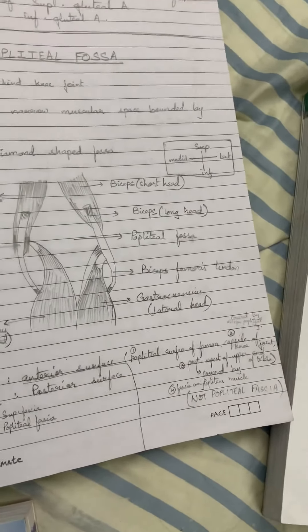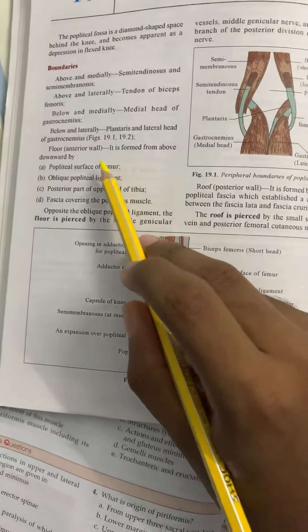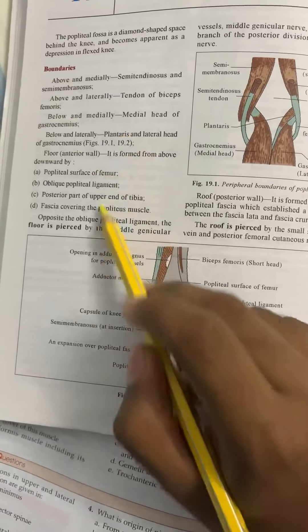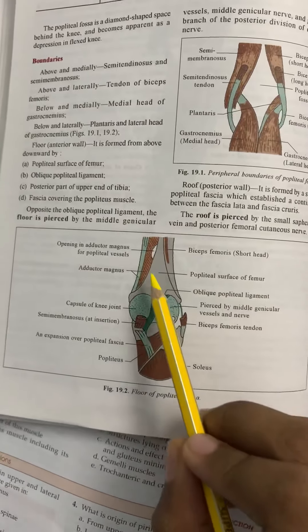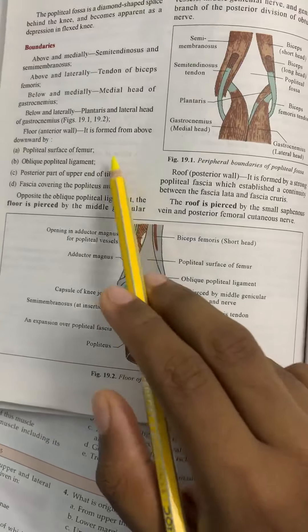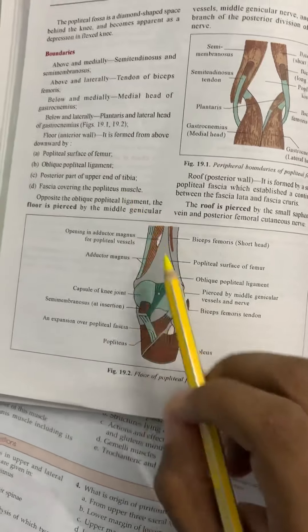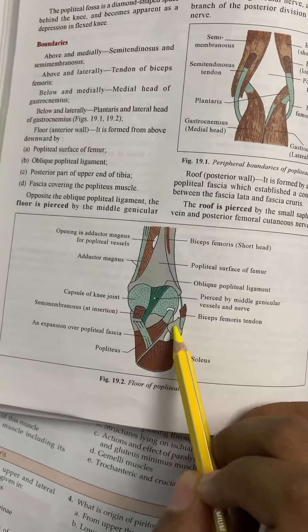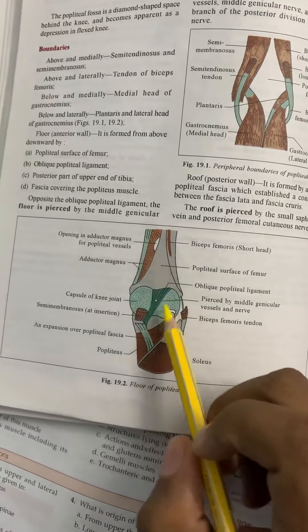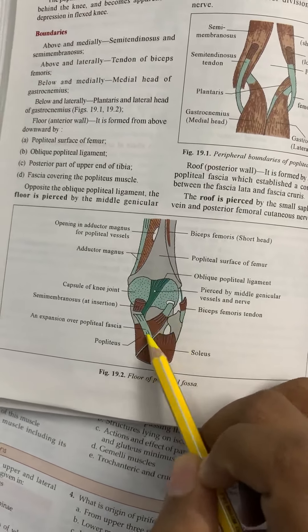Now, the structures forming the floor of the popliteal fossa — according to Datta, because there is a difference between BDC and Datta, we will follow Datta. The floor is formed, from above downwards, by the popliteal surface of the femur, then the oblique popliteal ligament, the posterior part of the upper end of the tibia, and finally the fascia covering the popliteus muscle.